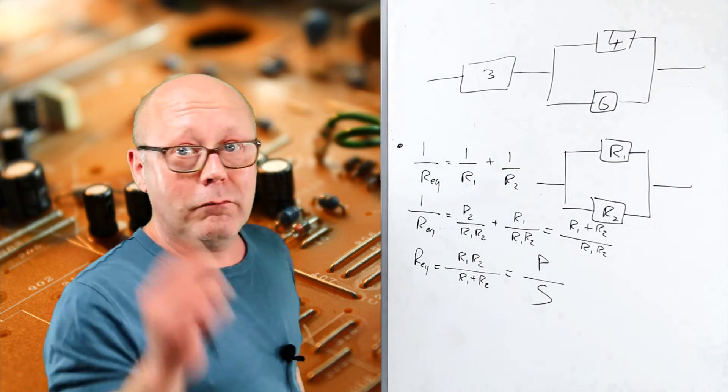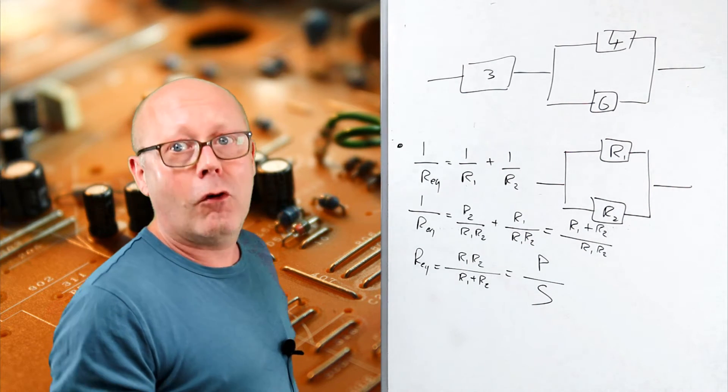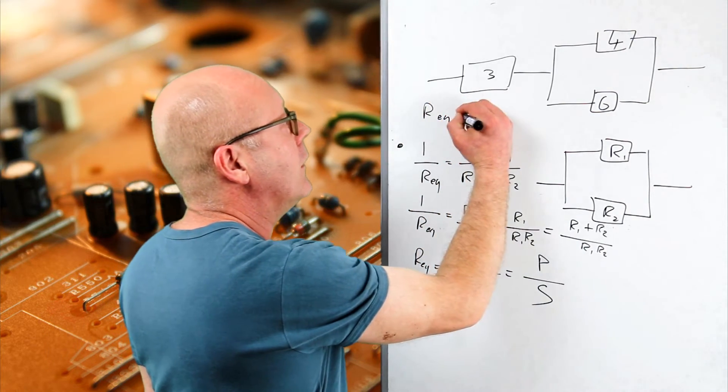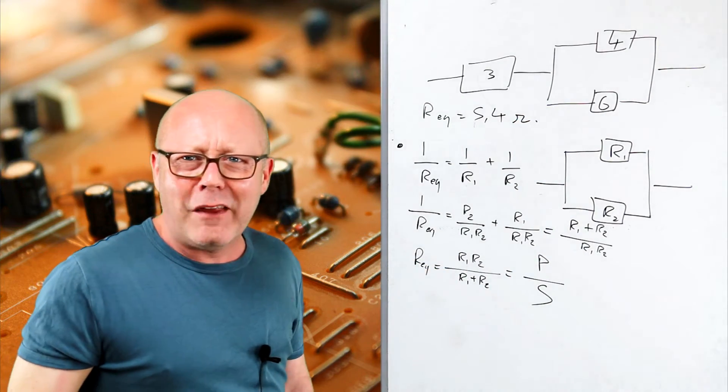Well, I can tell you, look, 6 by 4, 24 divided by 6 plus 4, 10. So it's 2.4 plus 3. The R equivalent is 5.4 ohms. How did I do that?